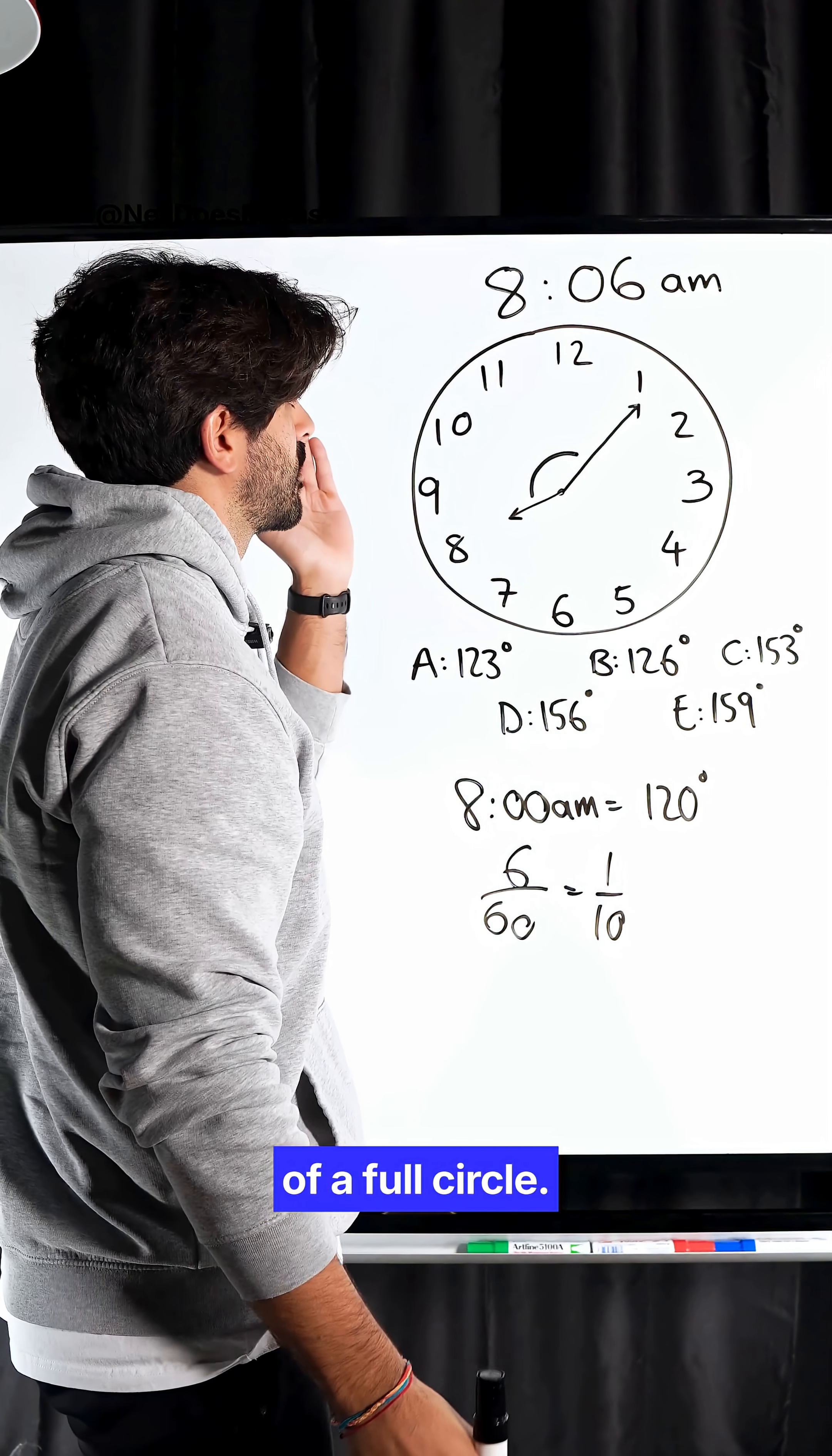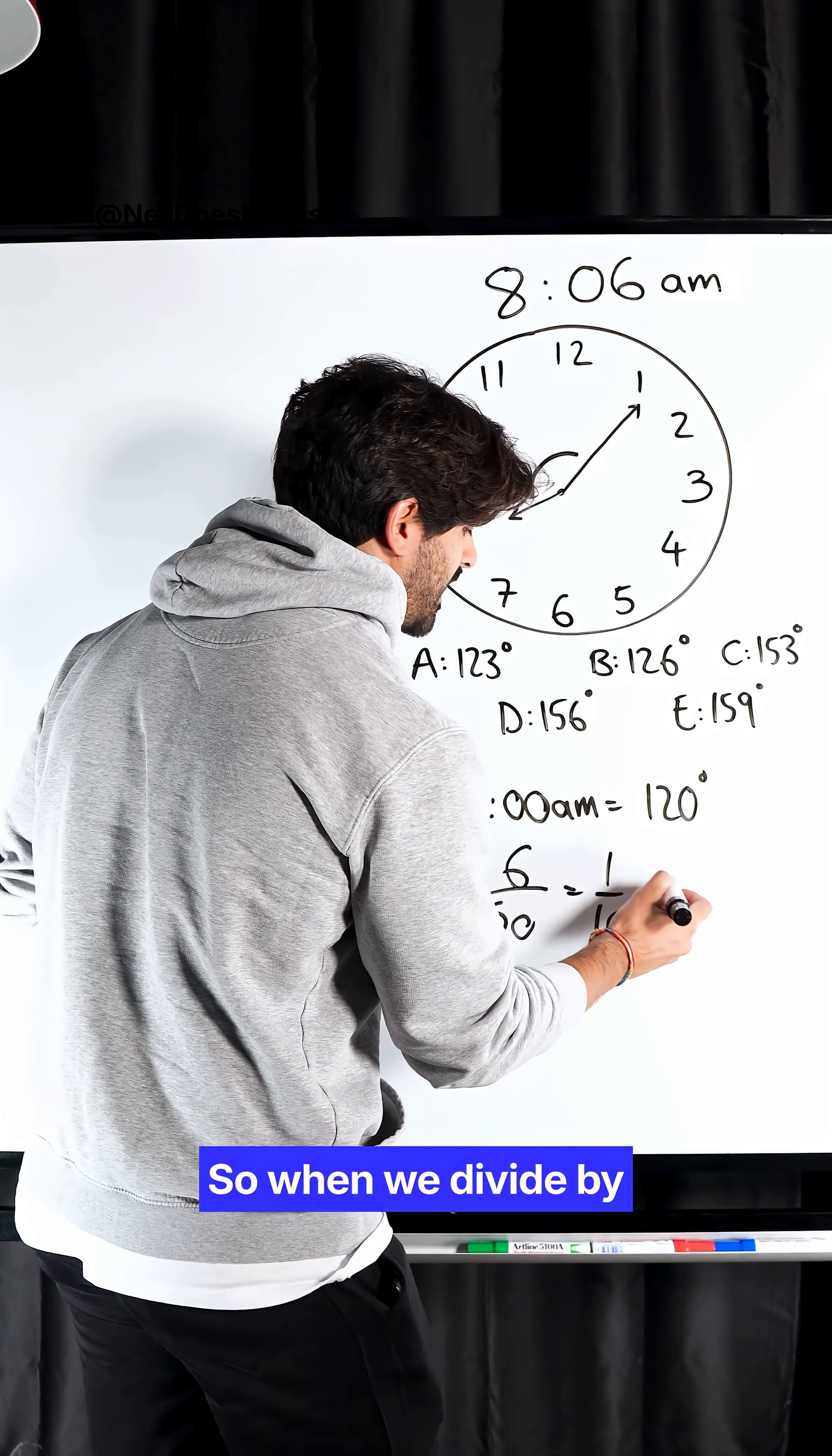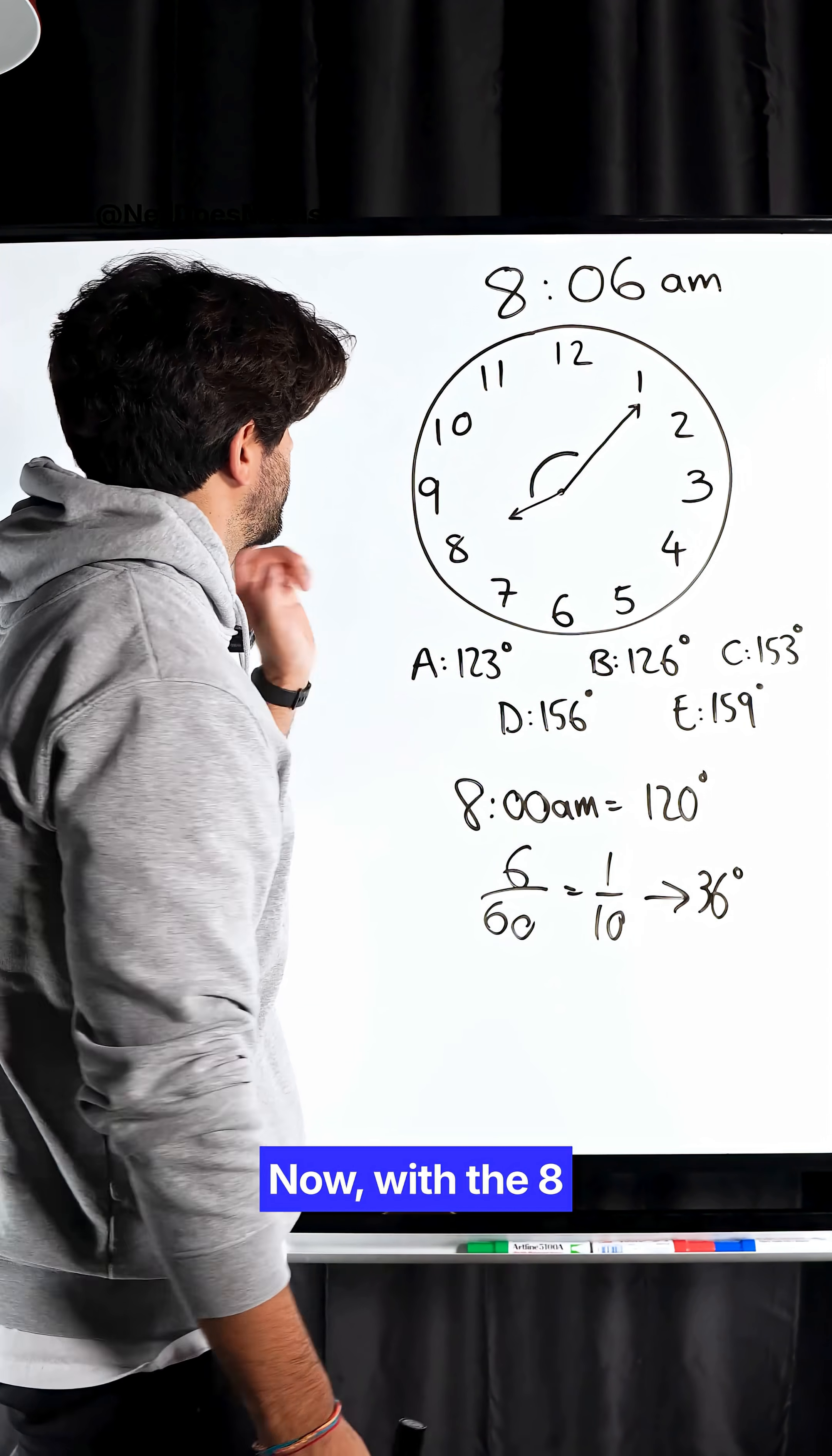So it's doing one-tenth of a full circle. A full circle is 360 degrees, so when we divide by 10, it's 36 degrees.